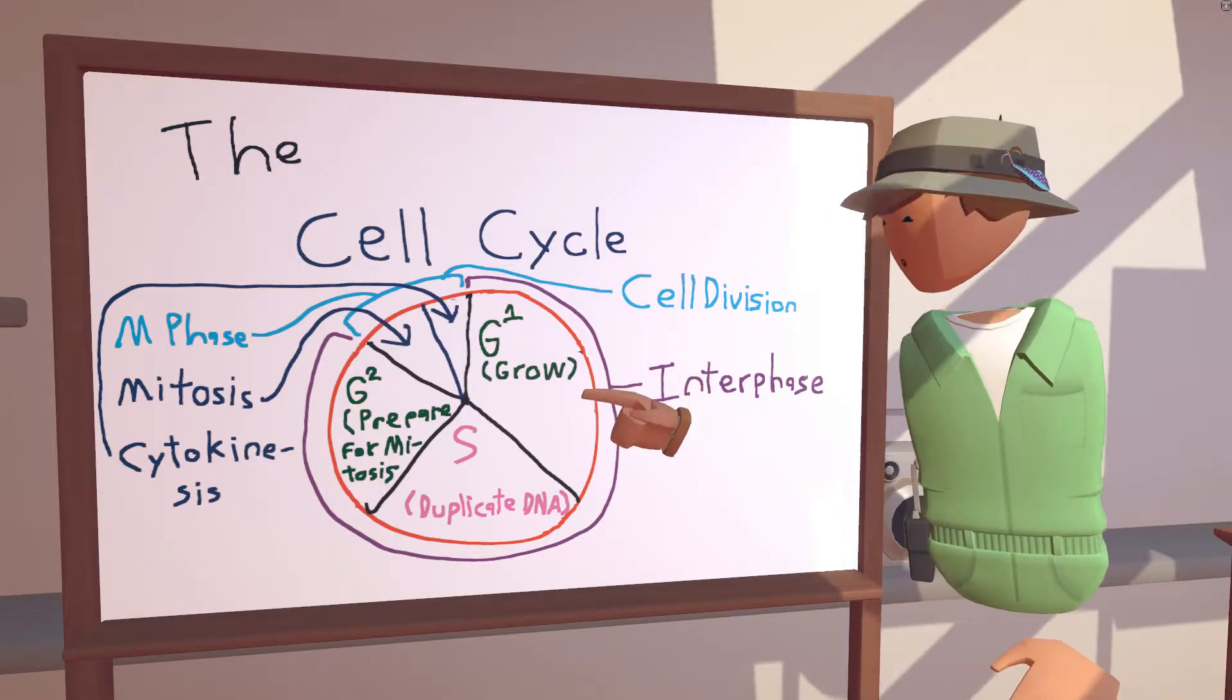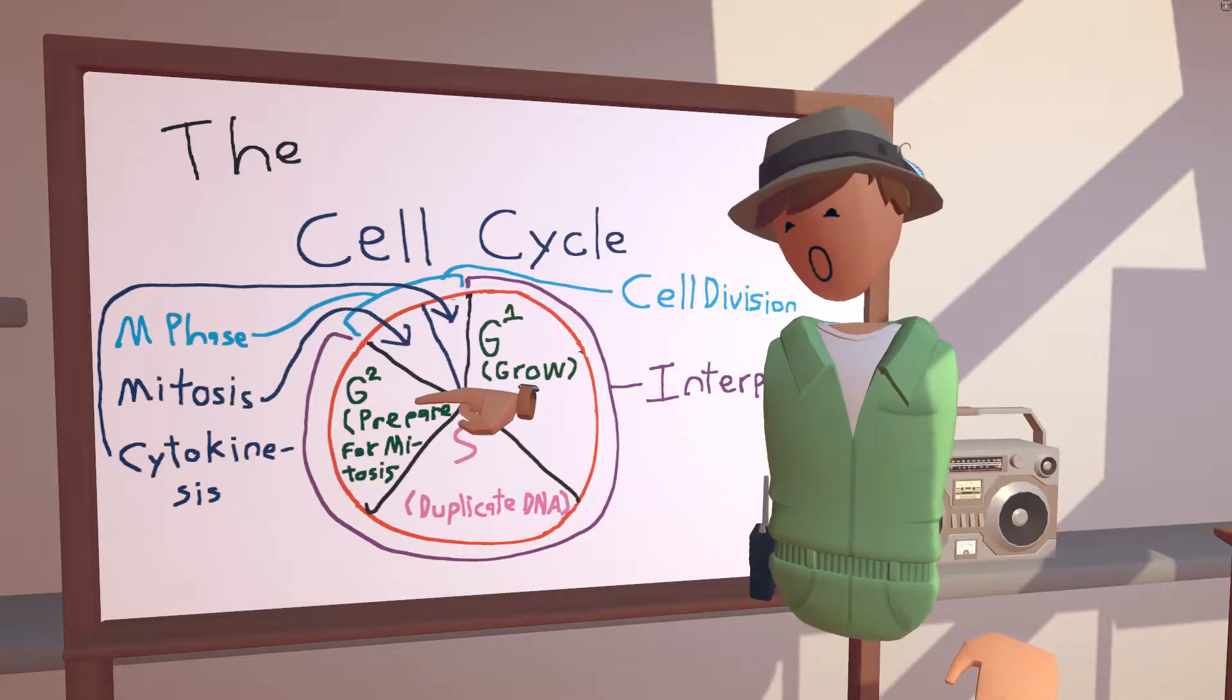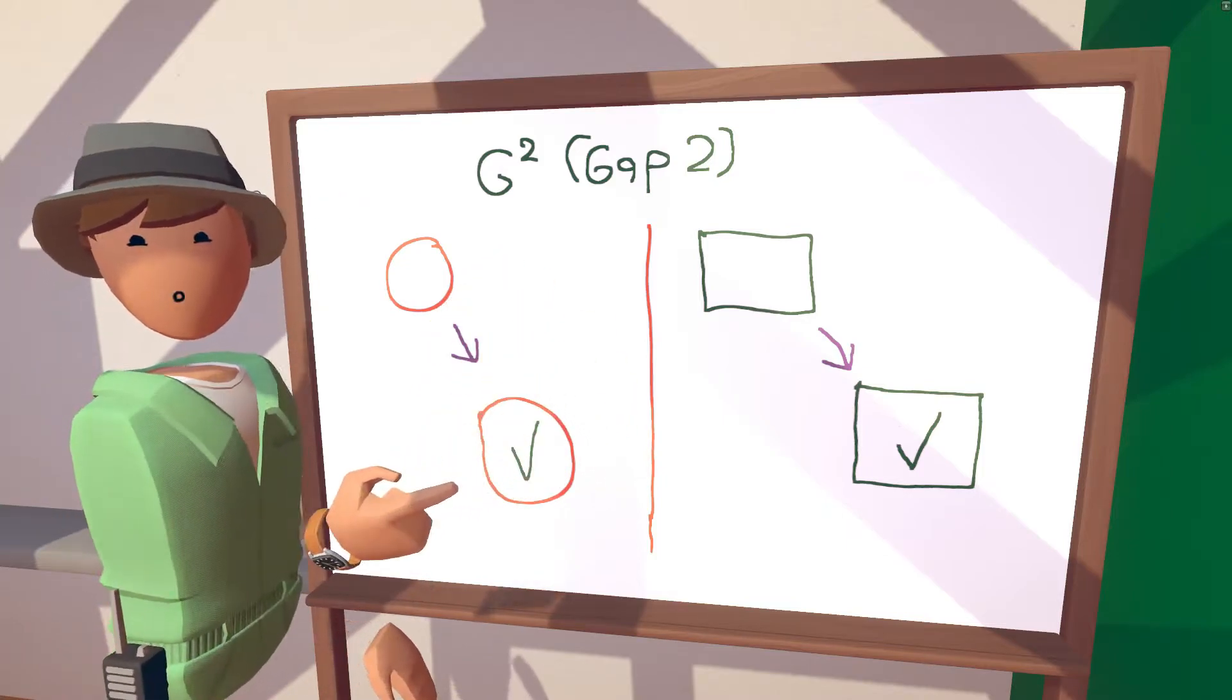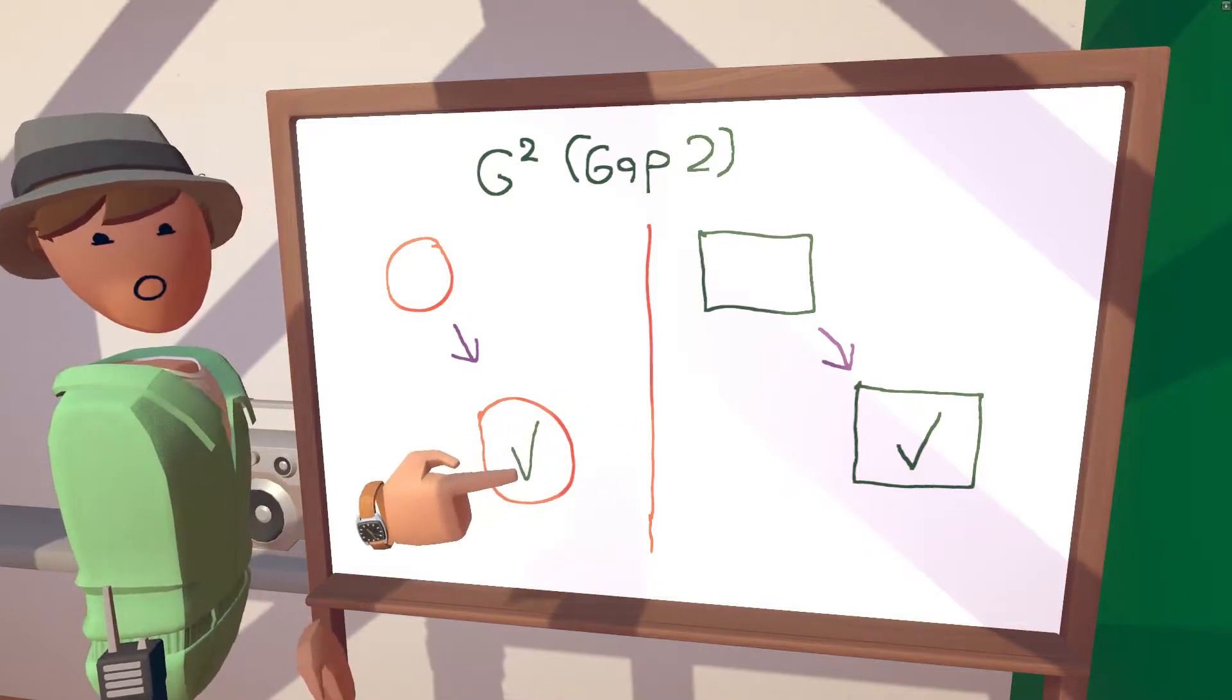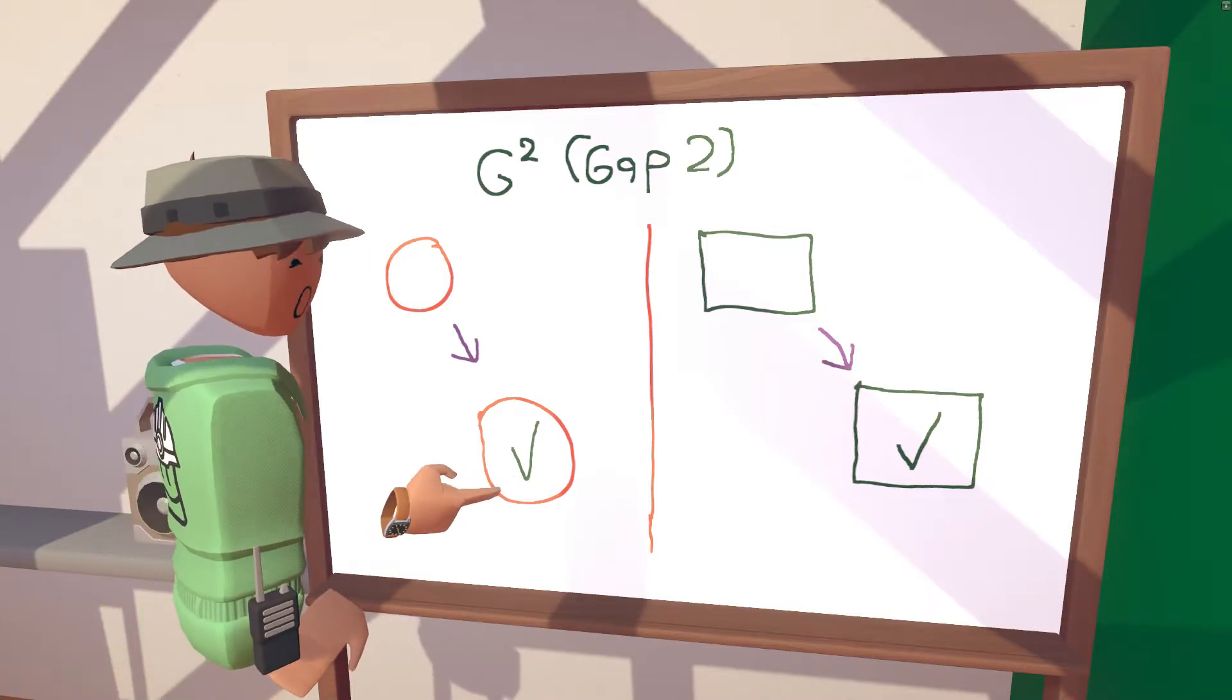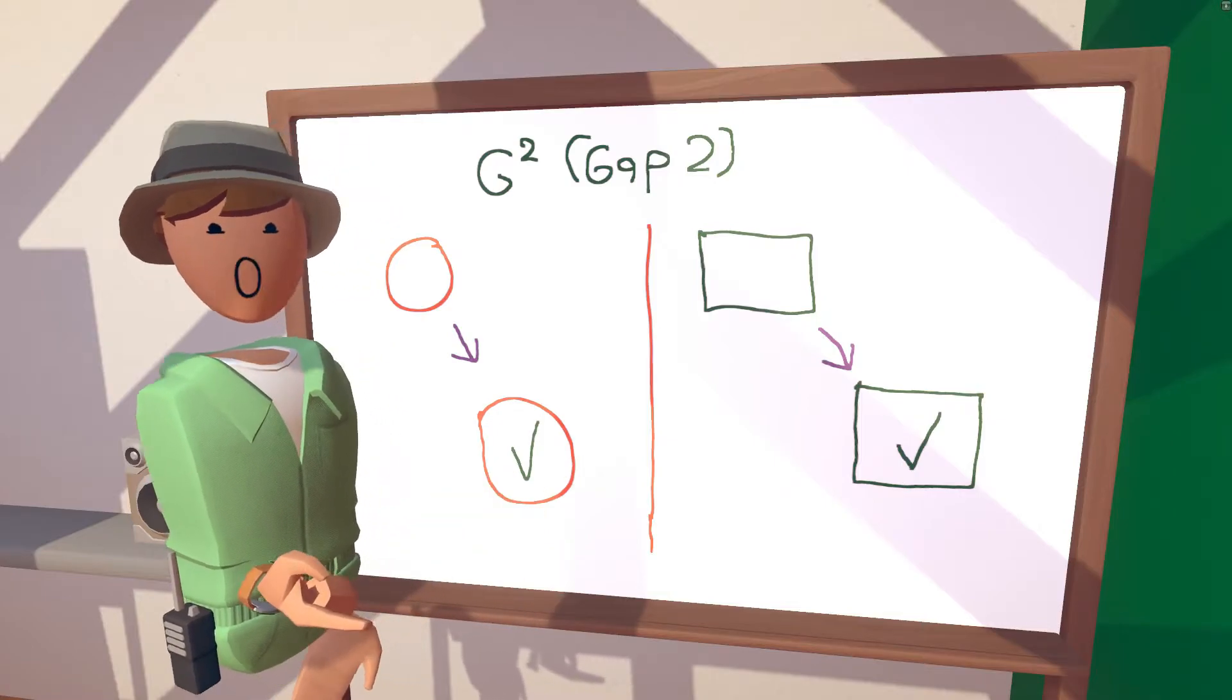And after S phase is complete, the cell cycle goes into gap 2, or G2. And in G2, the cells prepare for mitosis to occur. And during that preparation, the cells must be checked to make sure that they did S phase correctly. So here we can see the animal cell has been checked correctly, as well as the plant cell. And that means that they've done S phase correctly.